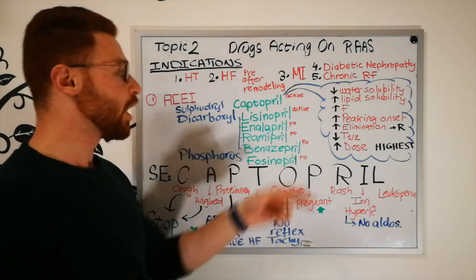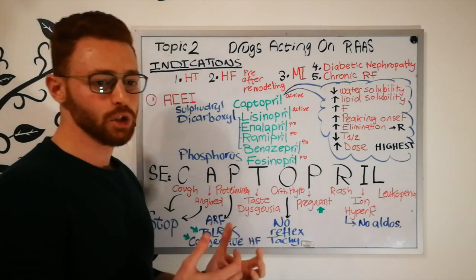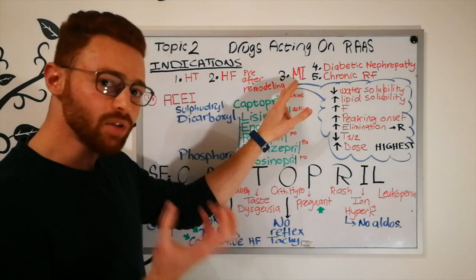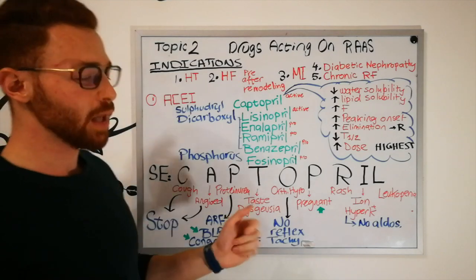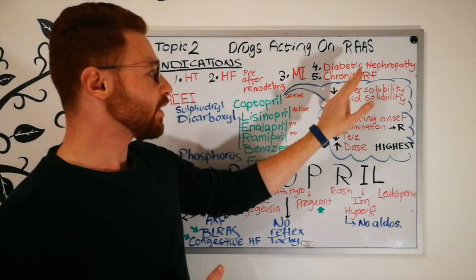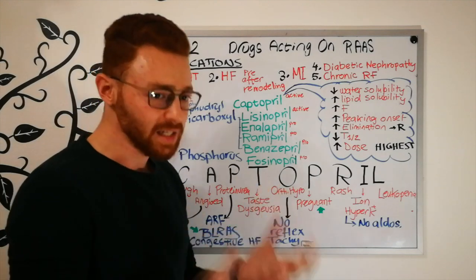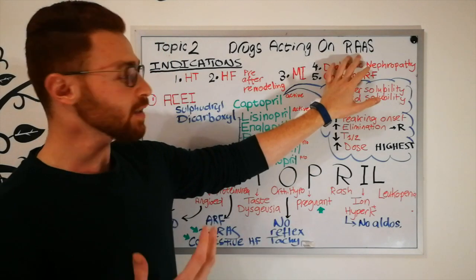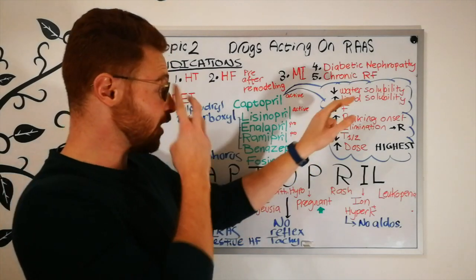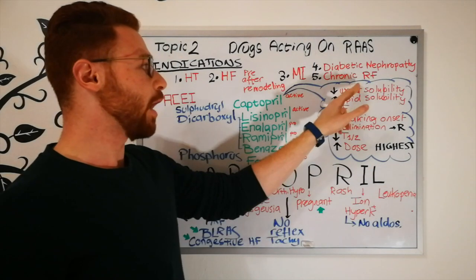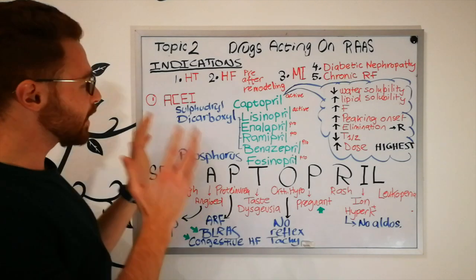Other indications include myocardial infarction, where ACE inhibitors reduce post-infarction cardiac remodeling and scarring. Diabetic nephropathy, where renal remodeling deteriorates kidney function and ACE inhibitors slow that process. And chronic renal failure, where they similarly decrease long-term kidney remodeling.